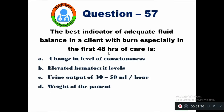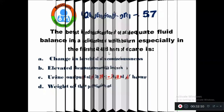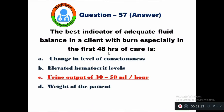Question 57: The best indicator of adequate fluid balance in a client with burns, especially in the first 48 hours of care, is — option A change in level of consciousness, B elevated hematocrit levels, C urine output 30 to 50 mL per hour, D weight of the patient. Urine output between 30 to 50 mL per hour is the best indicator for the client affected with burns in the first 48 hours of care.